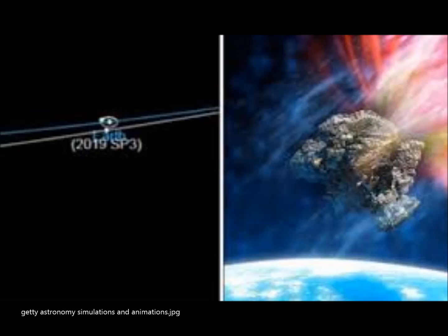The asteroid is set to skim past the planet Thursday at a distance of 0.97 lunar units. The lunar distance between the Earth and the Moon is one lunar unit, so this means that the space rock will pass within 231,690 miles of our planet.